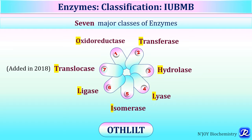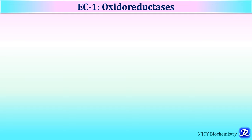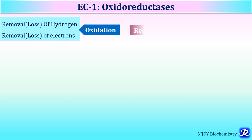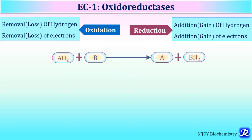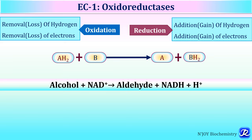EC1 includes oxidoreductases, which catalyze oxidation-reduction reactions. Oxidation is removal or loss of hydrogen or electrons, and reduction is gain of hydrogen or electrons. These enzymes catalyze reactions of biological oxidation. For example: alcohol + NAD⁺ forms aldehyde + NADH + H⁺ ions, where hydrogen is transferred from alcohol to the coenzyme NAD⁺.